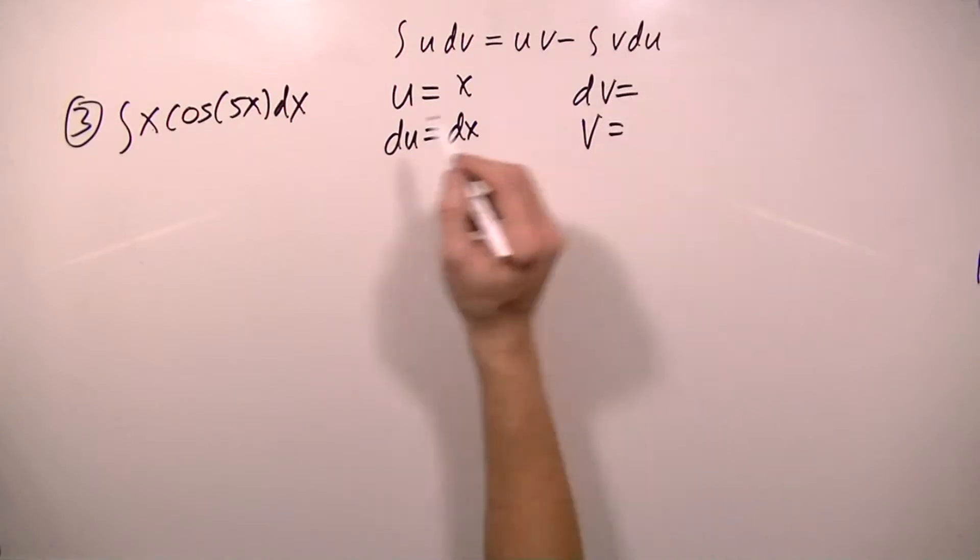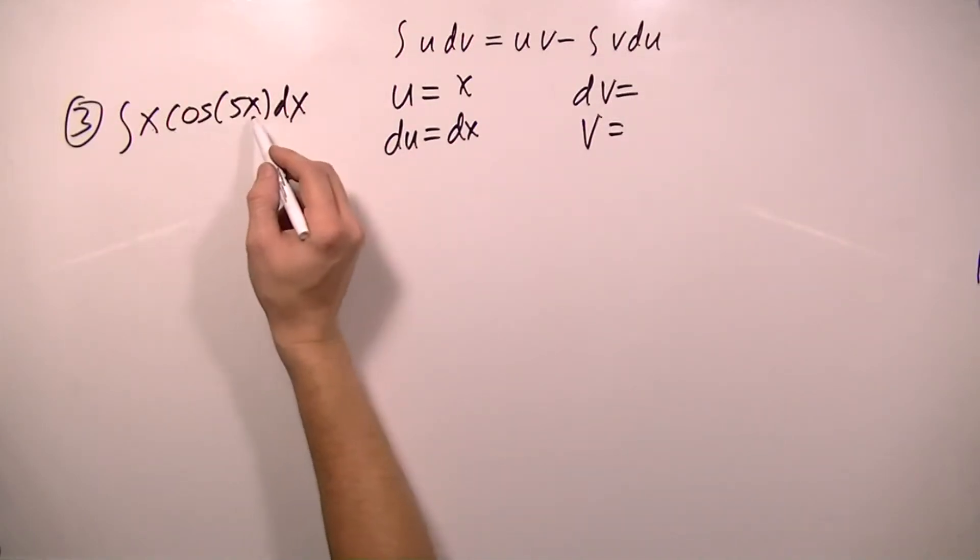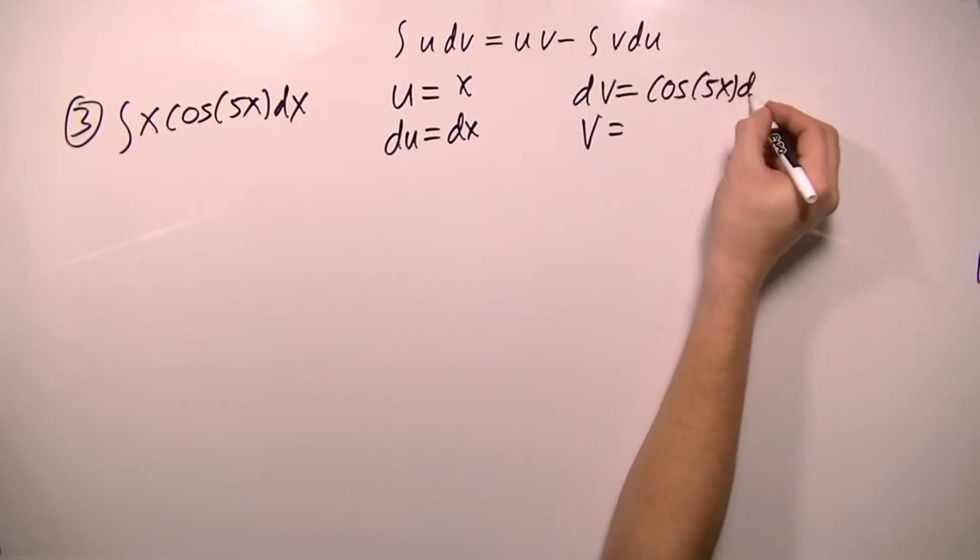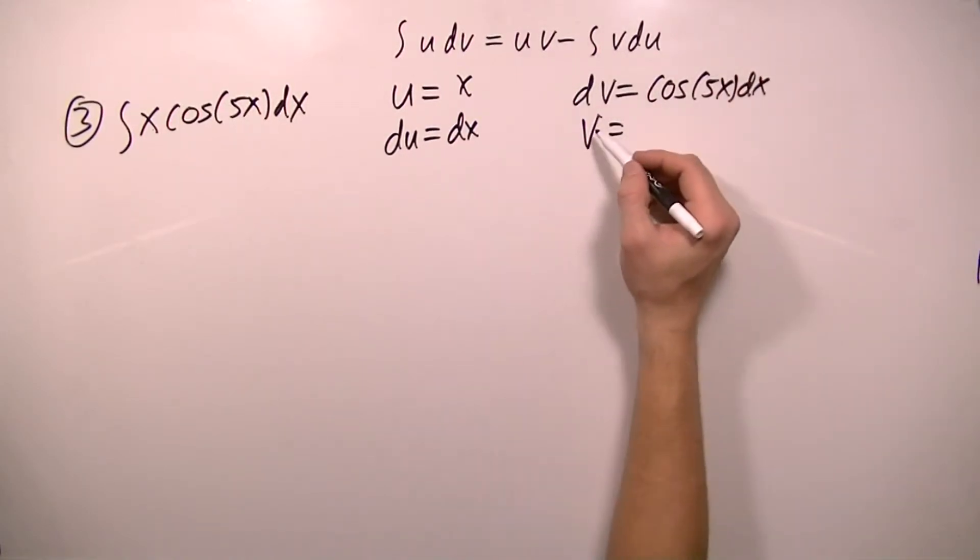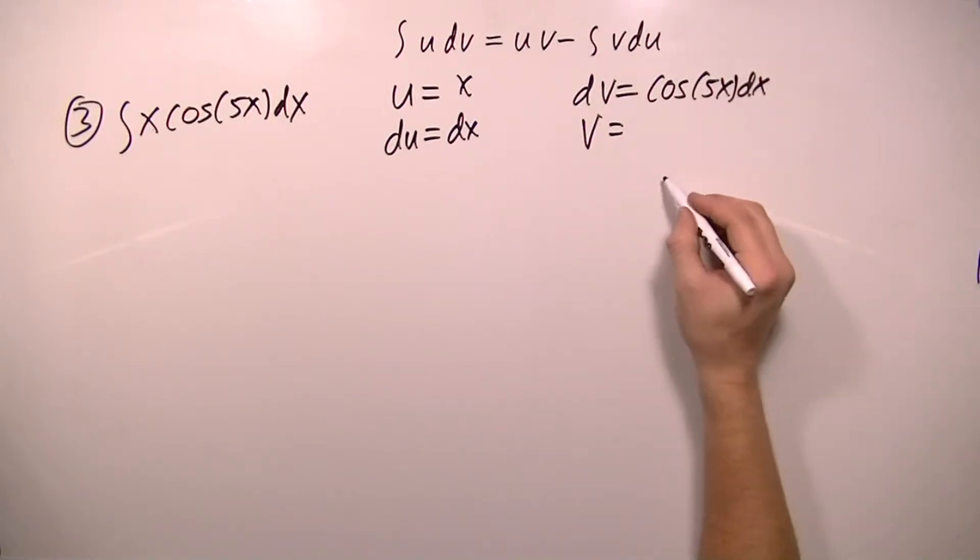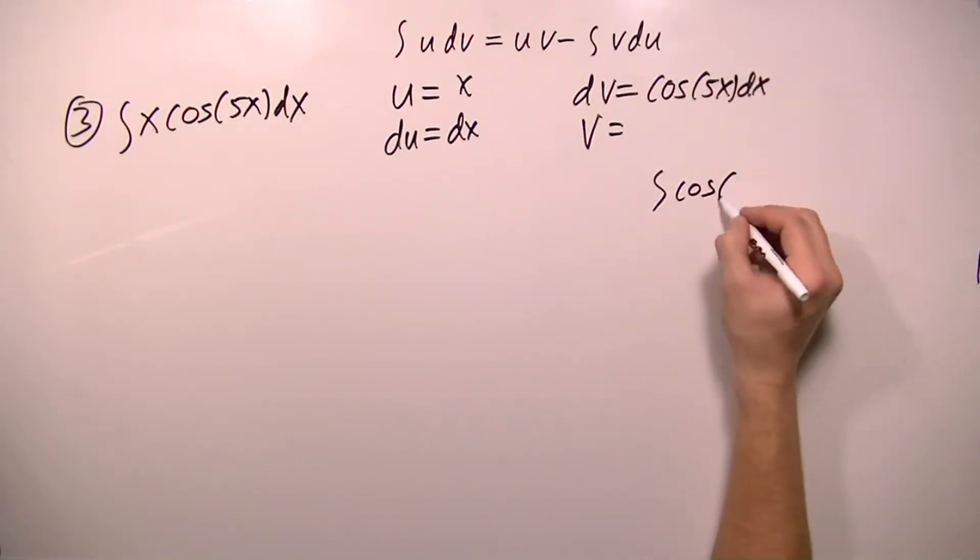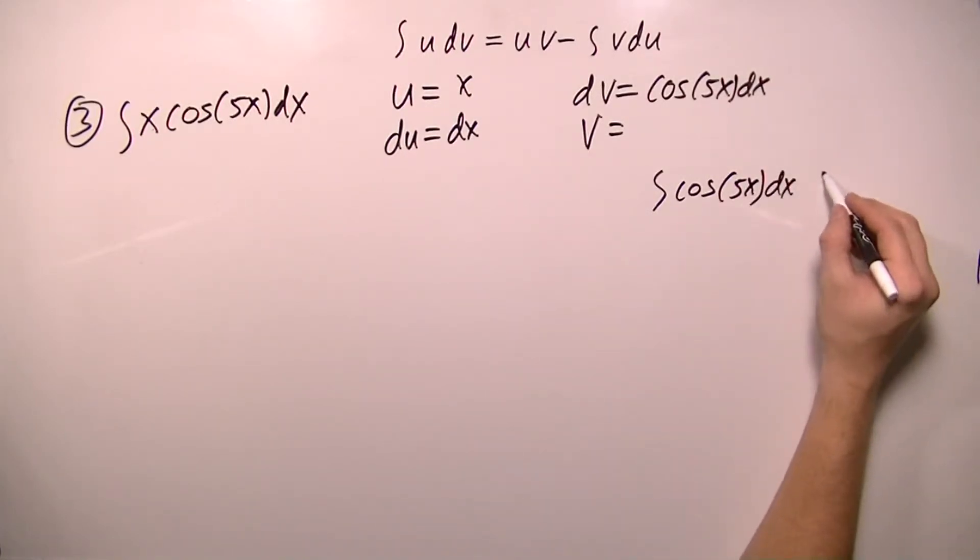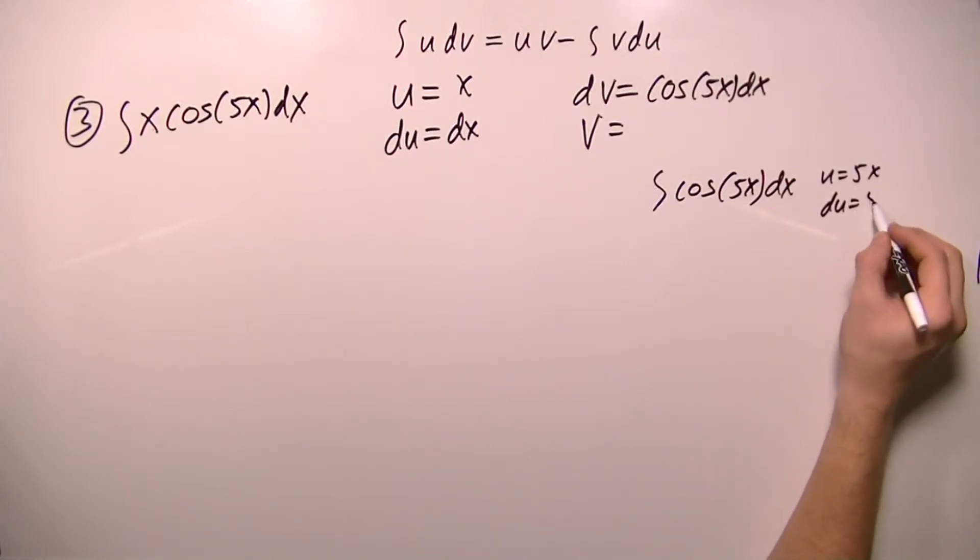So that means dv has to be what is left, and that will be cos 5x dx. And since v is the integral of dv, I need to take the integral of cos 5x dx. And to do that, I need to use a substitution. u equals 5x, so du equals 5 dx, and du over 5 equals dx.